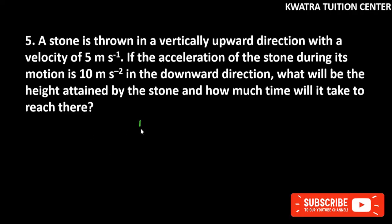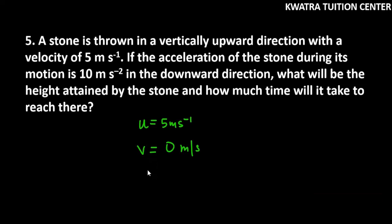So first, we have given u = 5 meters per second. And they said that it will come to rest, which means the final velocity v = 0 meters per second. Acceleration in downward direction is 10 meters per second squared.